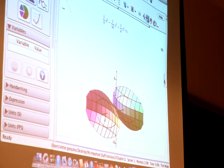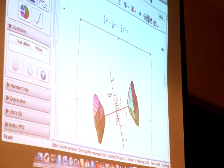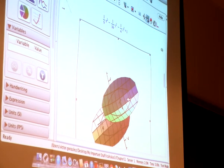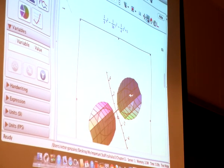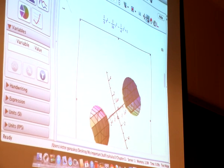This is the hyperboloid of two sheets. You can see some of the traces there. We have an ellipse parallel to the YZ plane. And then we also have what looks like hyperbolas parallel to the XY plane.